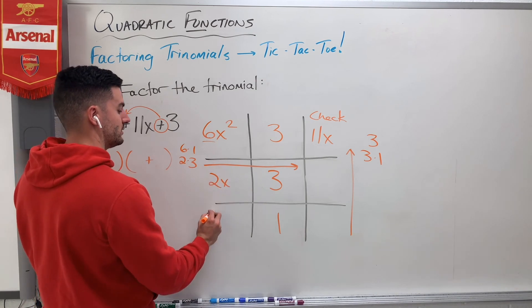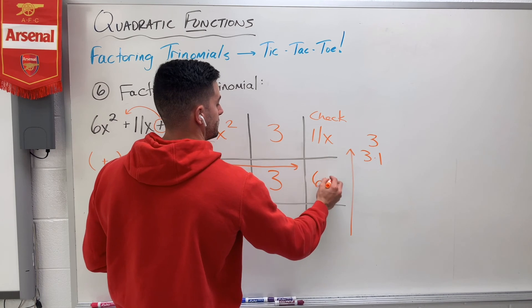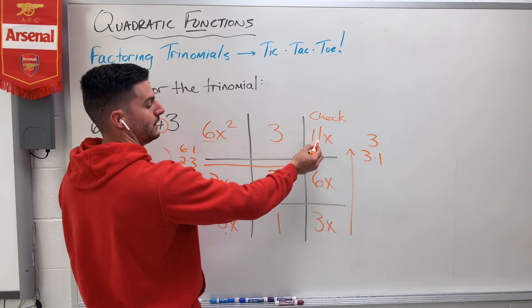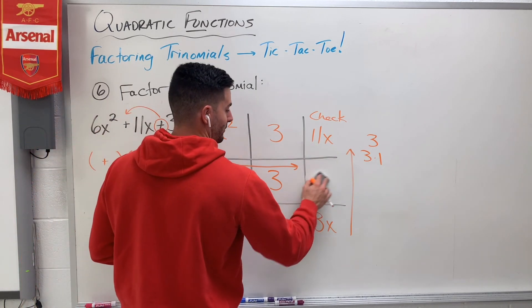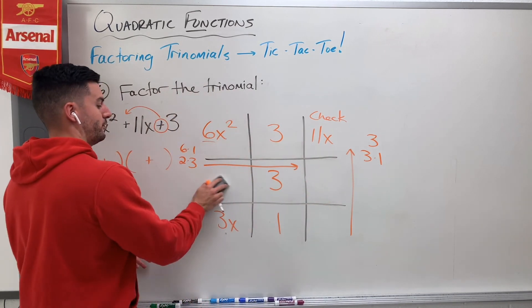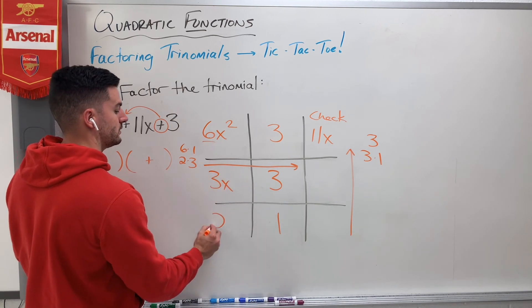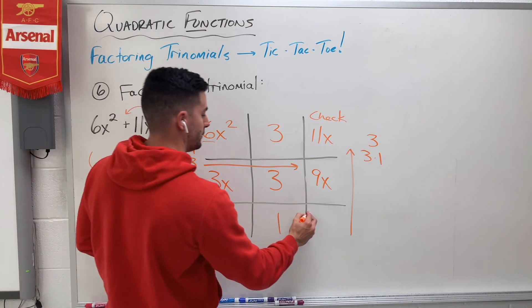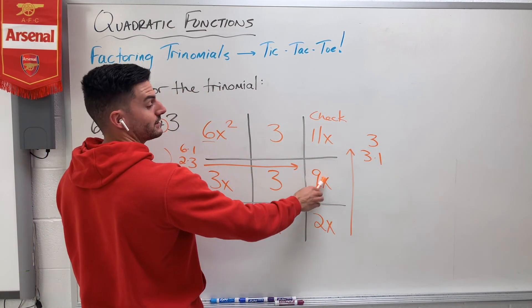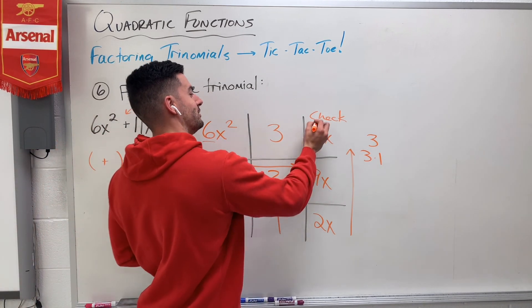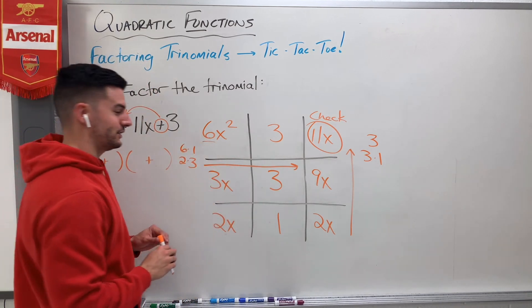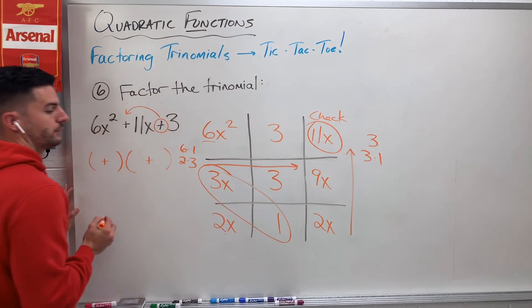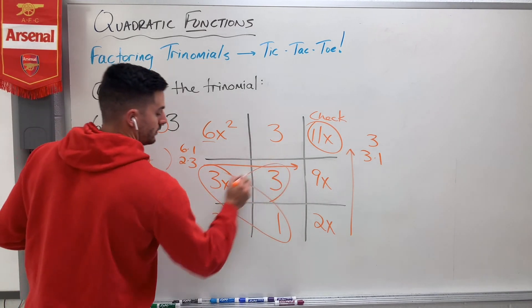I tried both ways with 6 and 1 and it didn't work, so it's probably going to be 2 and 3. Let's try 2x and 3x. 2x times 3 gives me 6x, 3x times 1 gives me 3x. 3x plus 6x gives me 9x again — so close. Let's flip it around one more time and do 3x and 2x. 3x times 3 gives me 9x, 2x times 1 gives me 2x. 2x plus 9x gives me 11x. So my answer is going to be 3x plus 1 and 2x plus 3.